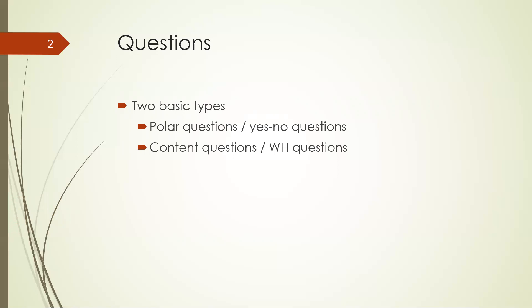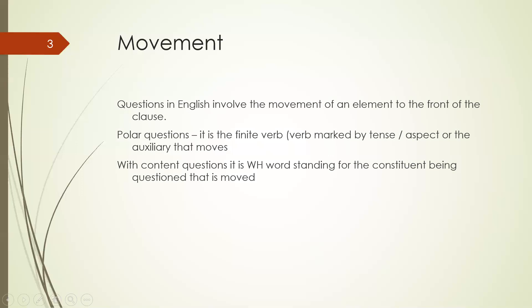The reason why they're called WH questions in English is that many of the words we use to ask the questions start with WH. So: when, where, why, who — 'who' is pronounced with an initial H but is still written with WH — and 'how' is now written with WH as well. These words have some kind of connection between them. And across the languages of the world, we actually see multiple cases where a language will have these content question words starting with the same letters — but we'll come back to that in a little while.